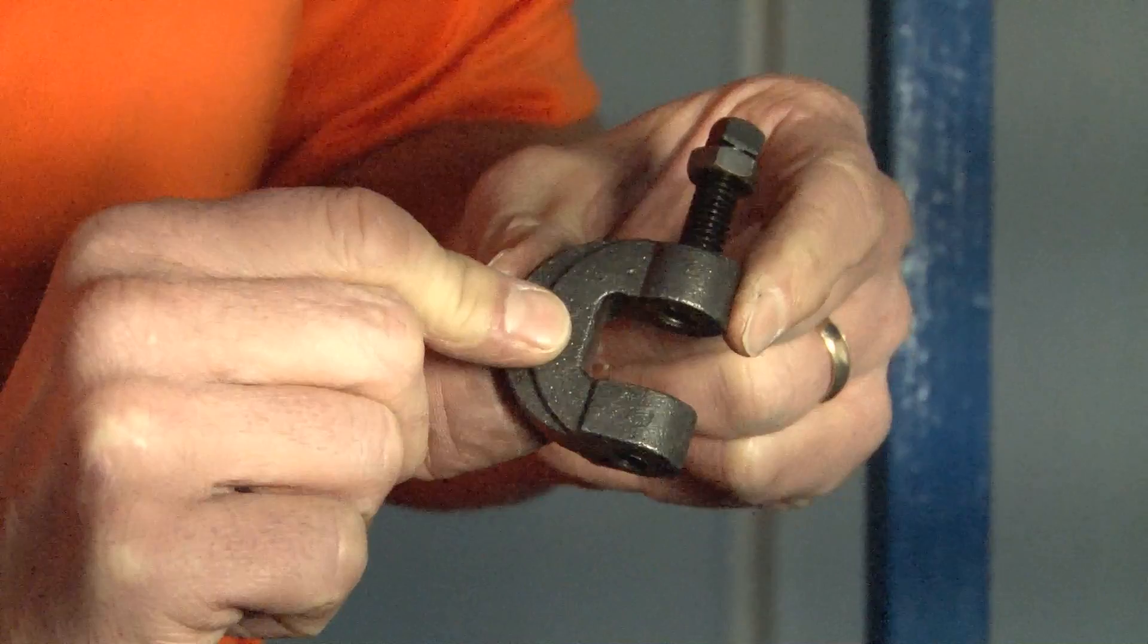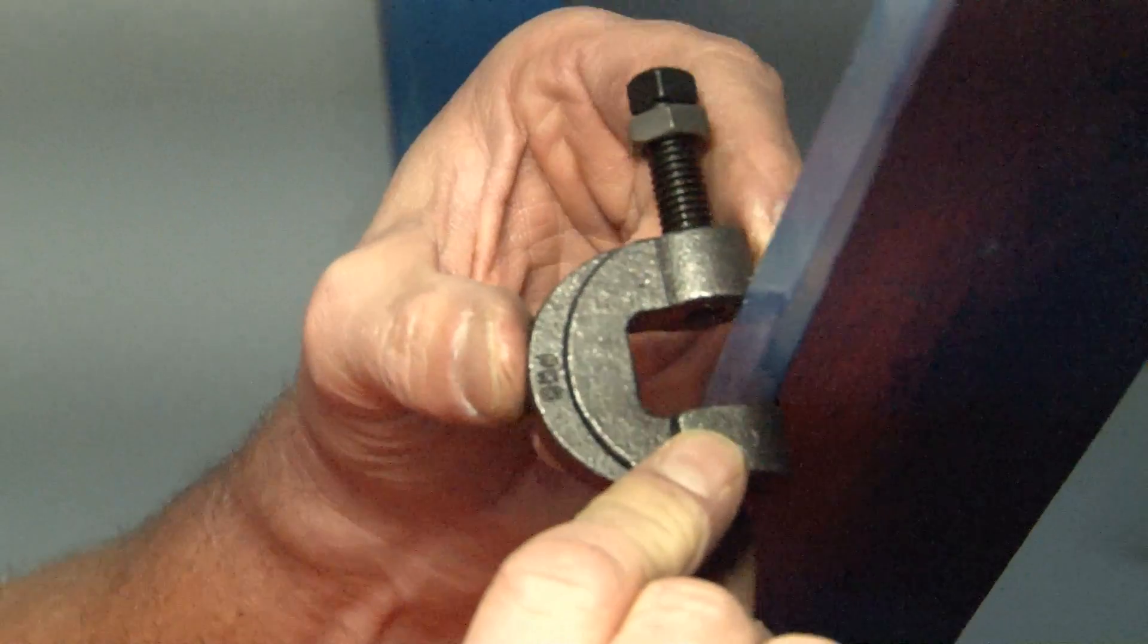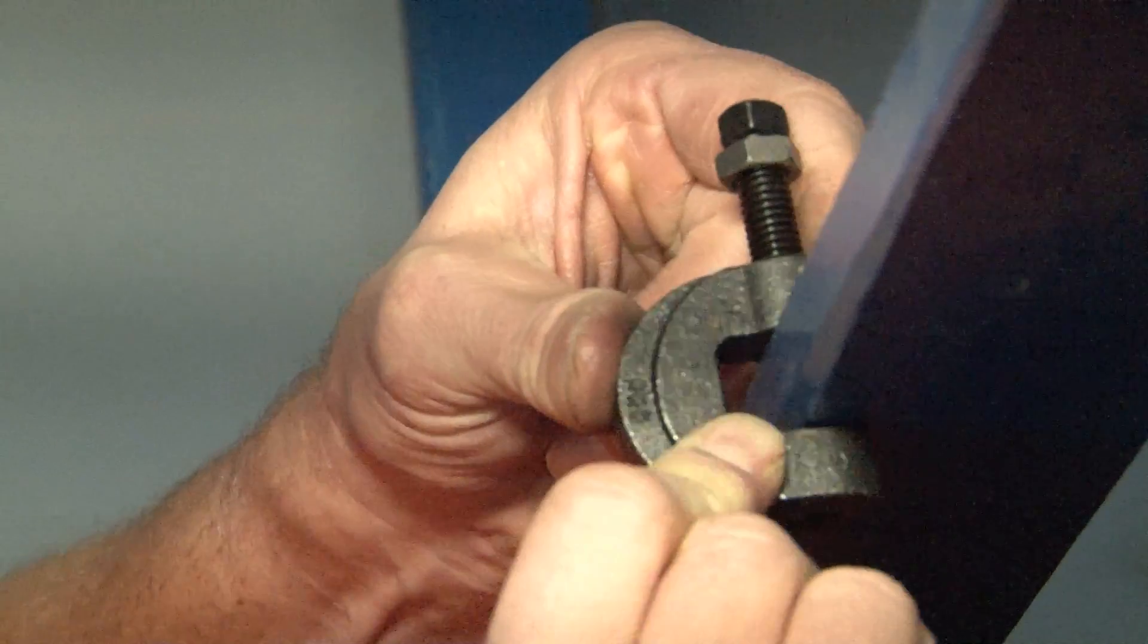The way this product installs is quite simple. You align the beam clamp with the edge of the beam and you push it into place where you would like to drop your threaded rod.